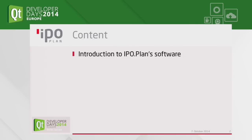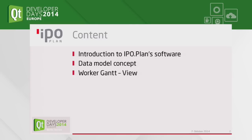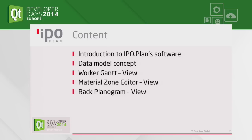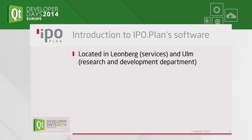First, I will start with an introduction to our company EpoBlan and the software and hardware we've made and developed. Then we will briefly cover the data model concept. We are going to look at one of our products, EpoLog, which is a 4D simulation software for factory planning. We'll look at three views: the worker gantt, the material station editor, and the rack planner. After that, Dennis will do a live implementation.